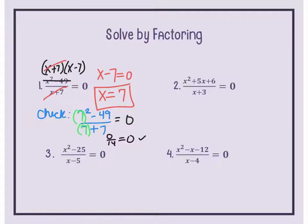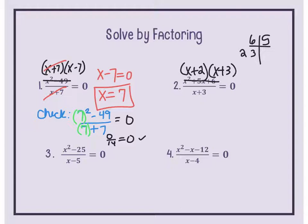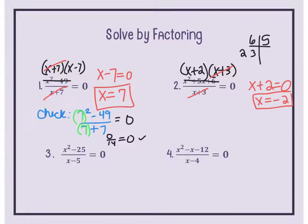For number two, the denominator is x squared plus 5x plus 6. Is it factorable? Are there numbers that multiply to 6 but add to 5? The answer is 2 and 3, so it factors to x plus 2 and x plus 3. If you have a common factor on numerator and denominator, they divide out to 1. You're left with x plus 2 equals 0, so x equals negative 2. Always check that the denominator does not equal 0.